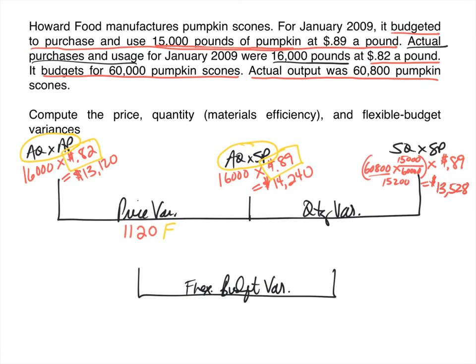The quantity variance is the difference between pegs two and three: $14,240 − $13,528 = $712. To determine favorable or unfavorable, focus only on quantity. Actual quantity was 16,000 pounds but we should have used only 15,200 pounds at our actual production level — we used more than we should have, so this is an unfavorable variance.